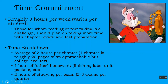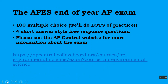We have two to three exams per quarter. The end of the year brings the AP Environmental Science exam. The exam is 100 multiple choice questions — we practice these throughout the year — and four short-answer style free response questions. These are not essay questions like in an English class with five paragraphs, an intro, and a conclusion. They are short-answer style responses that include complete sentences and short paragraphs, but nothing terribly lengthy. Please see the AP Central website for more information about the exam.